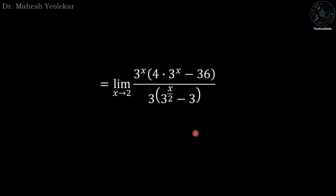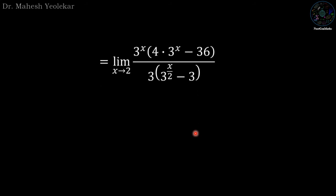Now in the numerator, 4 is a common factor, so take it out from the bracket: we have 4·(3^x - 9).